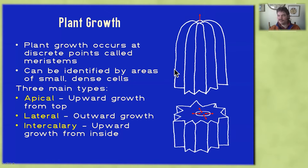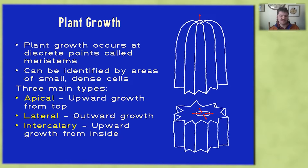So we've talked a lot about cells and cell walls, but where do all these tissues originate? The answer is that they come from meristems. Unlike animals, which grow evenly across their whole body, plant growth occurs at discrete points called meristems. These can be identified in anatomical sections as areas of small, dense cells.